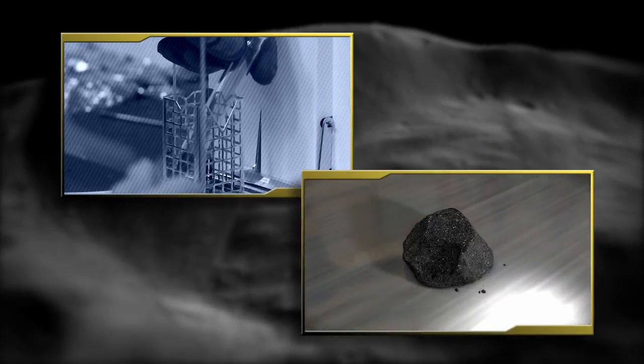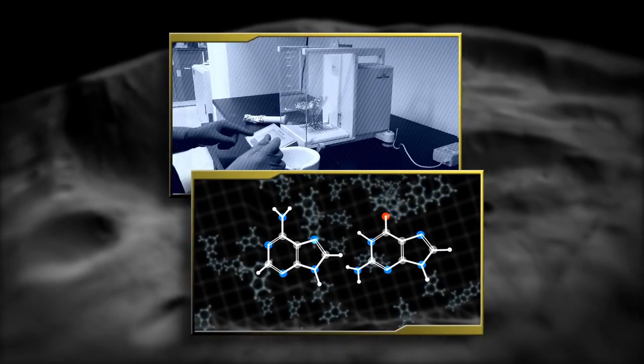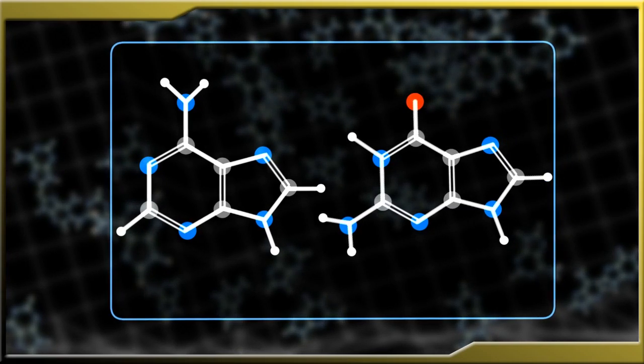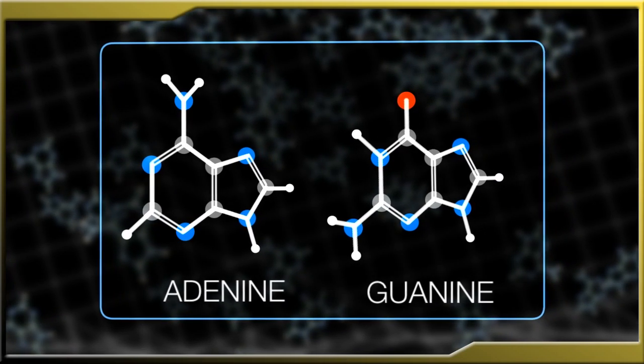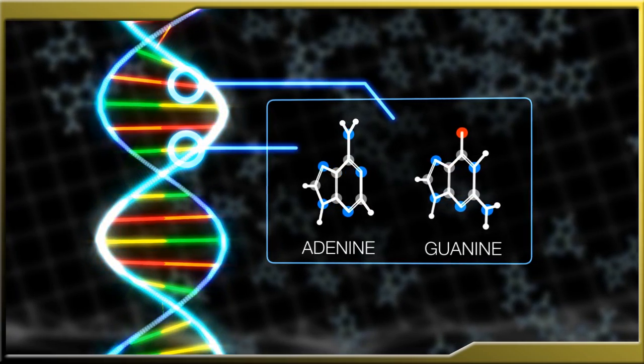Since Bennu may be rich in organic material or water left over from the formation of the solar system, sampling it could reveal whether the building blocks of life were present at that time, perhaps providing clues to the origins of life itself.